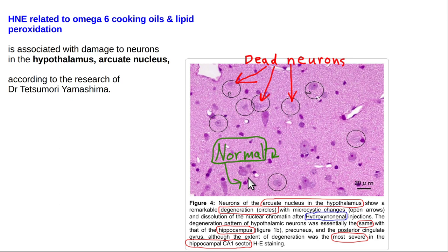A normal neuron shows a clearly visible nucleus, while a destroyed neuron has a nucleus fading into oblivion. As a person progressively loses more neurons in the arcuate nucleus of the hypothalamus — a key hunger center — they have less ability to regulate appetite. Most obese people remain obese long-term. The damage also occurs severely in the CA1 sector of the hippocampus, causing loss of neurons.